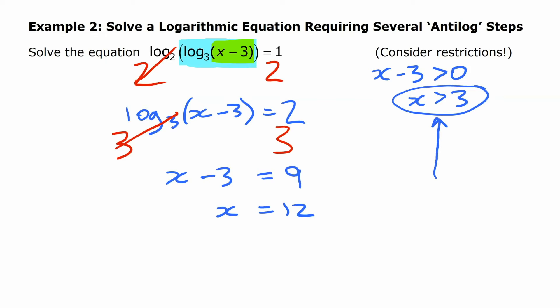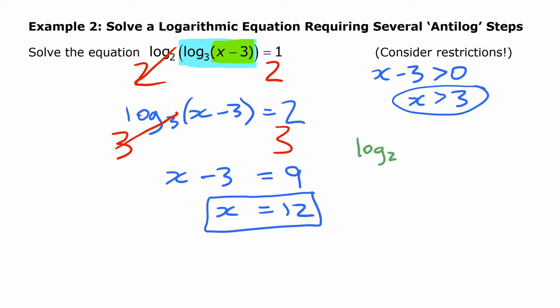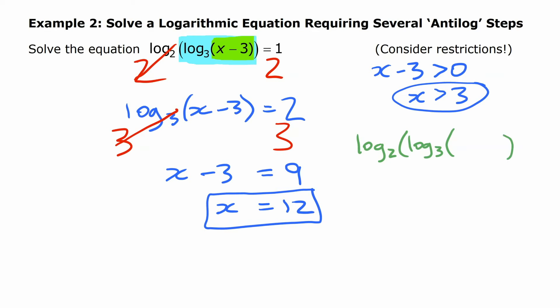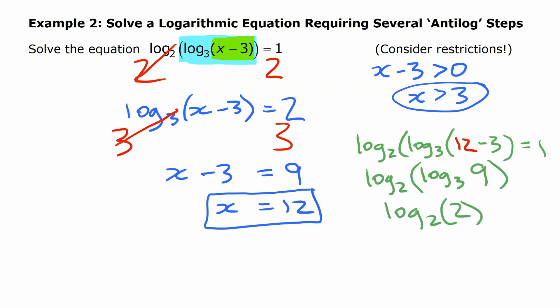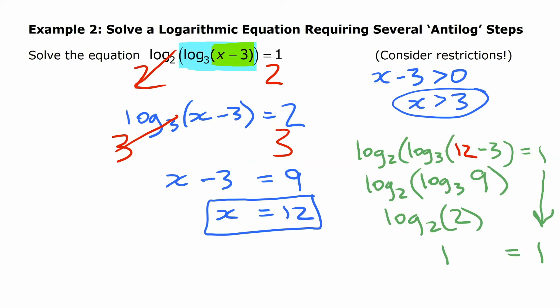We check again with our restriction — x has to be greater than 3, and 12 is, so that works. We can verify by substituting 12 in: x minus 3 gives 9, and log base 3 of 9 is 2, since 9 is 3 squared. Then log base 2 of 2 is 1, since 2 is 2 to the power of 1. That equals 1, which is what we have on the other side. So the solution x equals 12 is verified.